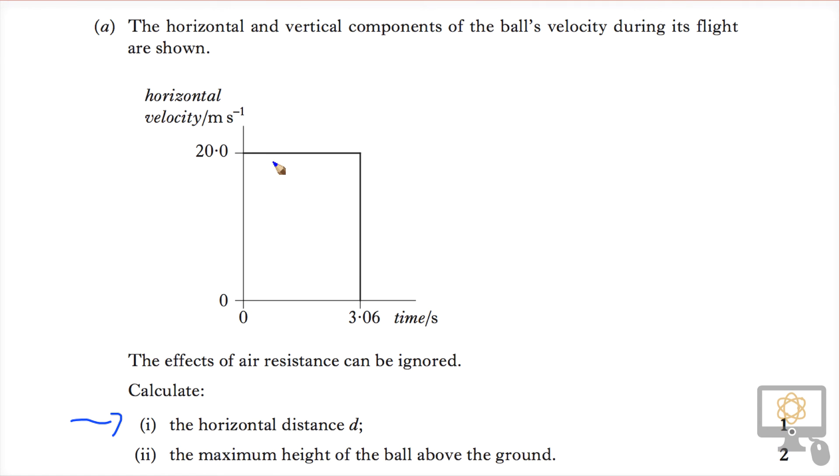One way we can do that is thinking about the area under the graph. We're just focusing on this section of the motion and the horizontal velocity. So the area is basically the base times the height. The distance traveled equals the area, which equals 3.06 times 20, and that gives us a value of 61.2 meters.